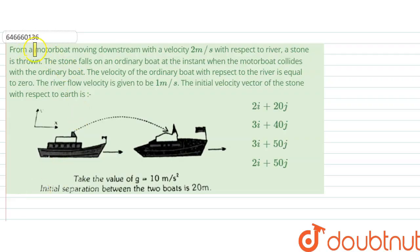The question says: from a motorboat moving downstream with a velocity 2 meter per second with respect to river, a stone is thrown. The stone is thrown from here to here. The stone falls on an ordinary boat at the instant when the motorboat collides with the ordinary boat.